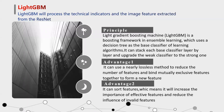The last improvement method is the LightGBM. This will process the technical indicators and the image features extracted from the ResNet. Light Gradient Boosting Machine (LightGBM) has a boosting framework in ensemble learning, which uses a decision tree as a base classifier. It can stack each base classifier layer by layer and upgrade the weak classifier to a strong one. One advantage is that it can use a nearly lossless method to reduce the number of features and bind mutually exclusive features together to form a new feature. The second advantage is that it can sort features, increasing the importance of effective features and reducing the influence of invalid features.